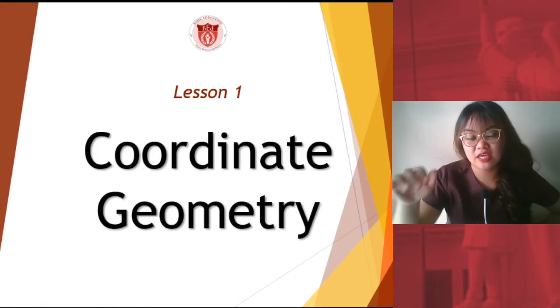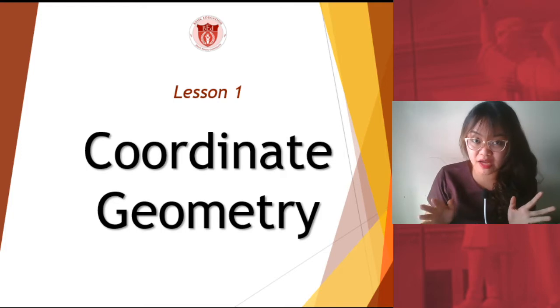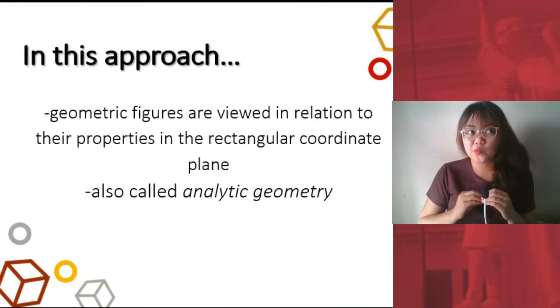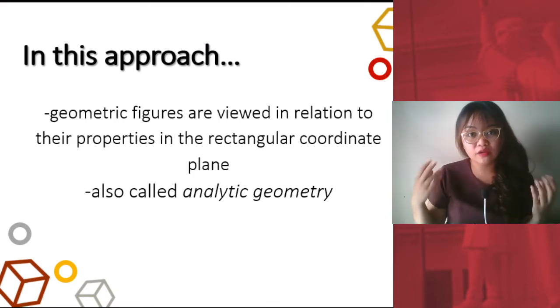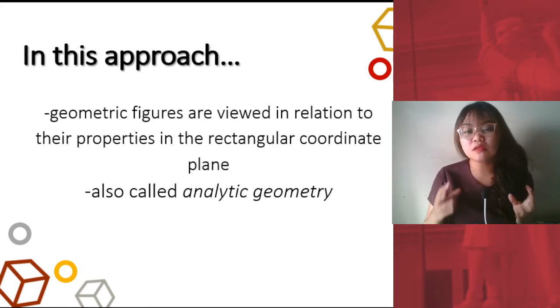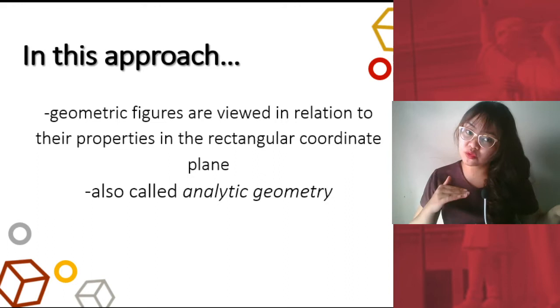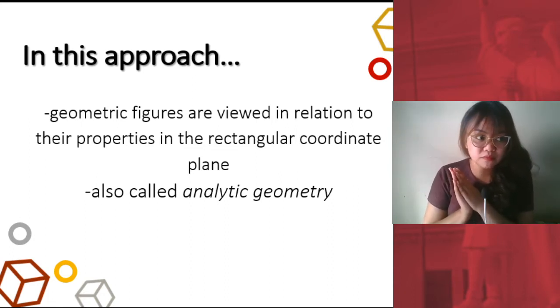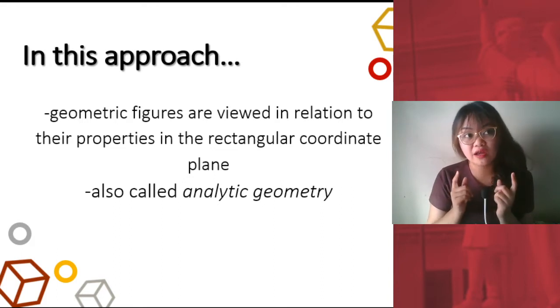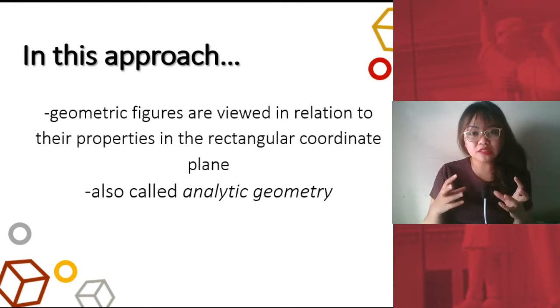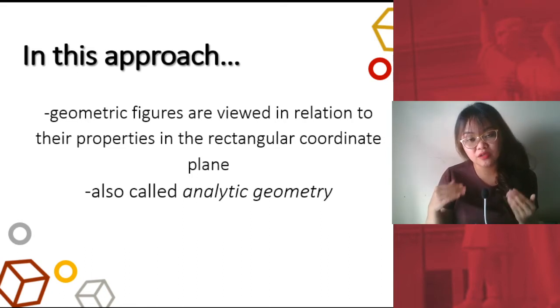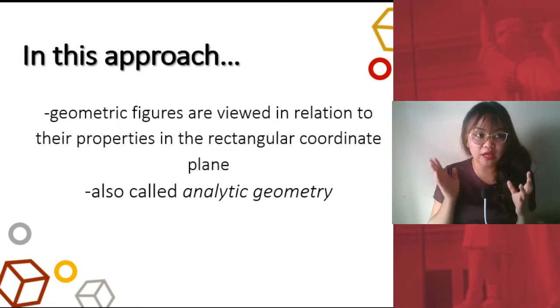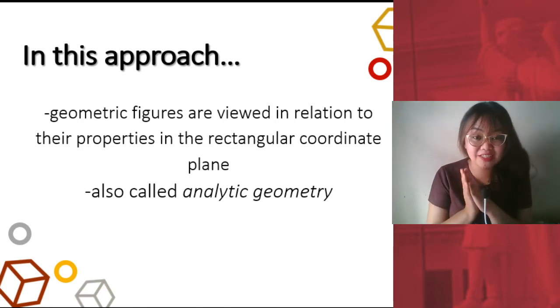So our lesson is on coordinate geometry. Coordinate geometry is a different branch of mathematics. And it is an analysis of geometric figures where they are viewed in relation to their properties in the rectangular coordinate plane. This is also called analytic geometry because you are analyzing in terms of X and Y. Back in your junior high school, whenever you talk about geometry, you are thinking of either a flat plane figure, say a square, a rectangle, or a triangle. And then you would be looking for the perimeter or the area. Or if it's 3D, say you have a cylinder or a cube or a cone, and then you would be looking for the volume of that. But now, in coordinate geometry or analytic geometry, we would be studying those figures as if they are superimposed in a rectangular coordinate plane.